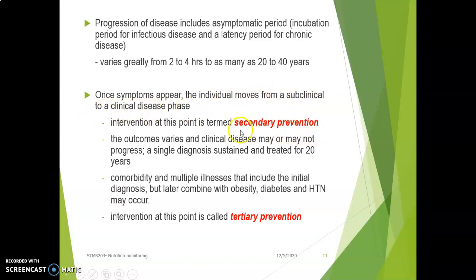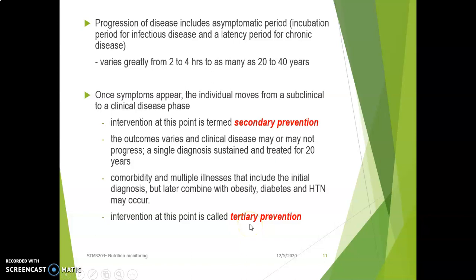Once symptoms appear, the individual moves from a subclinical to a clinical disease phase. Intervention at this stage is called secondary prevention. When multiple illnesses combine — such as obesity with diabetes — that is tertiary prevention, which we have covered in Lecture 1.